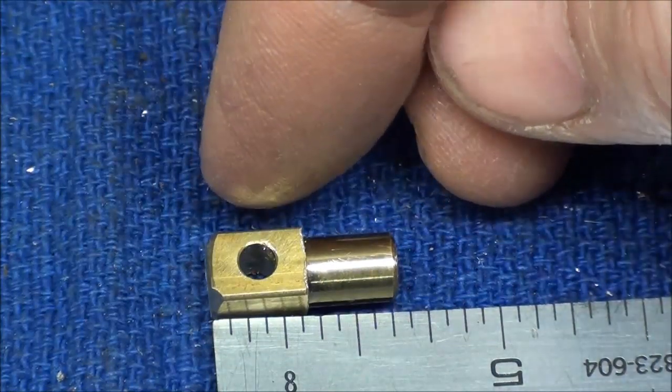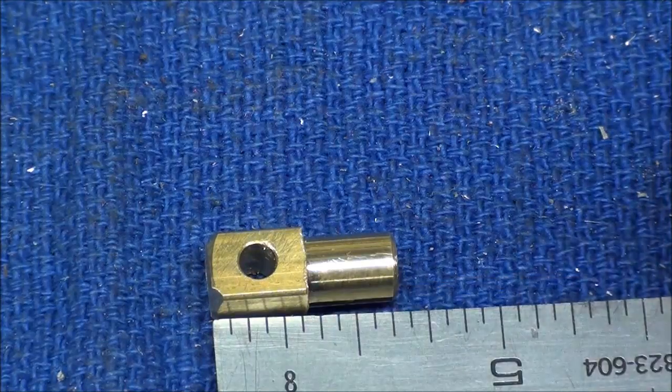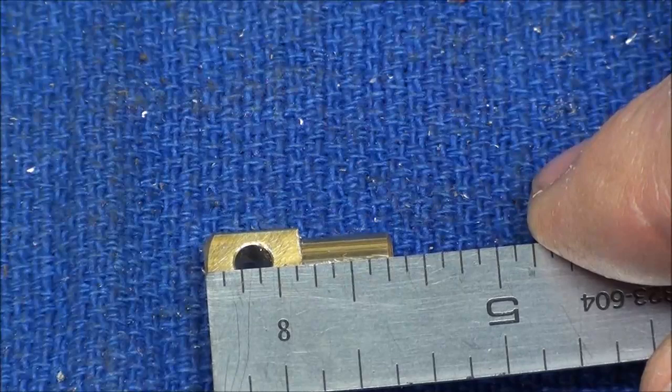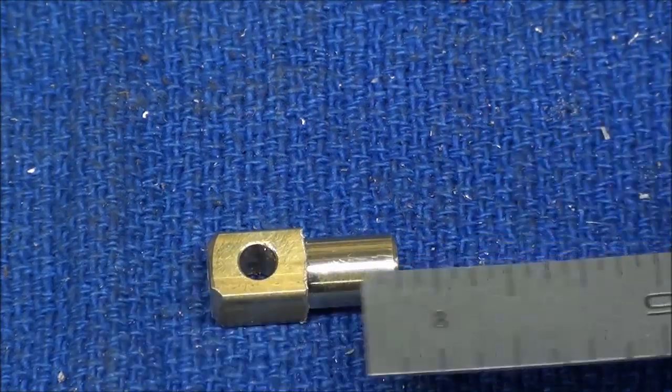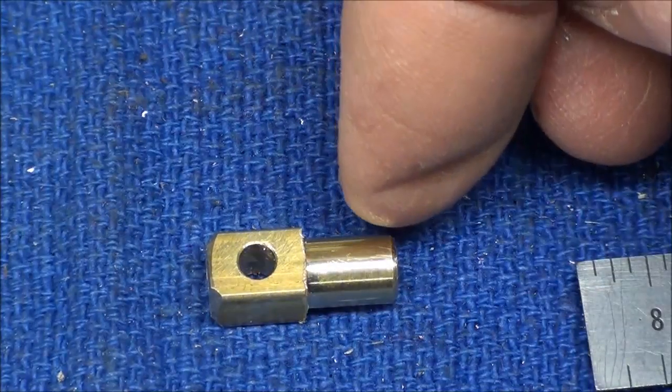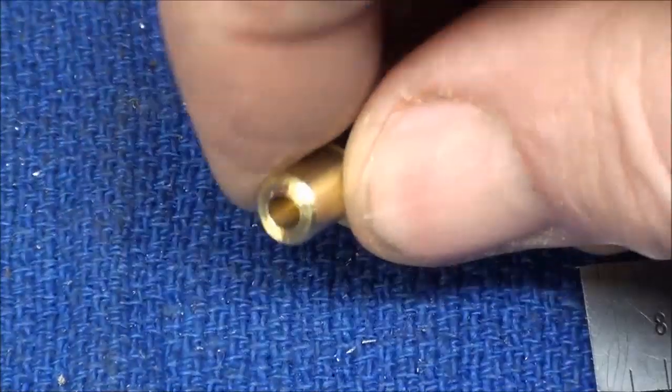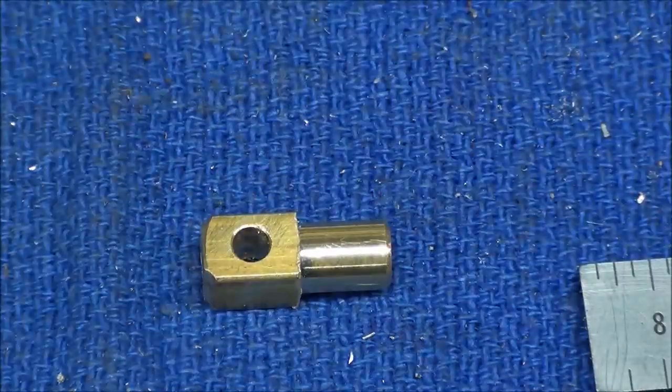The cross hole again is 1/8 inch and that can be approximately in the middle there, which is a little less than 3/16ths. Find the center of that. This is turned down to 1/4 inch or a little bit under and the end hole again was reamed 1/8 inch. So that piece is done and I'll turn my attention to the piston now.